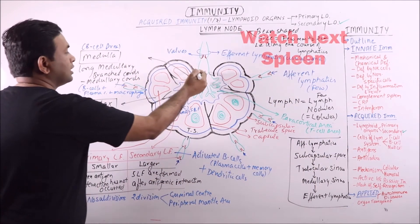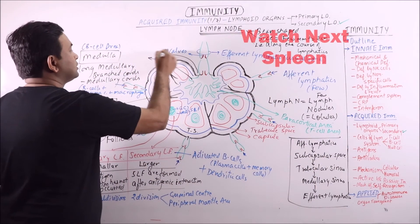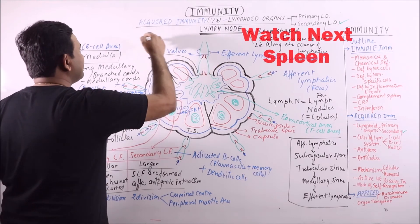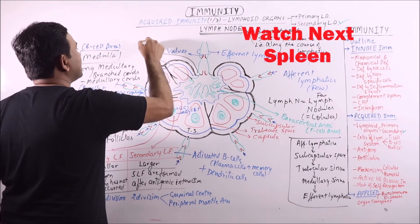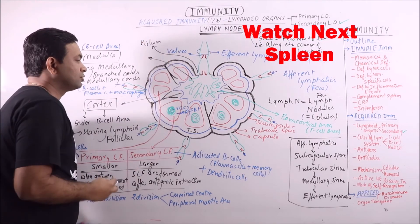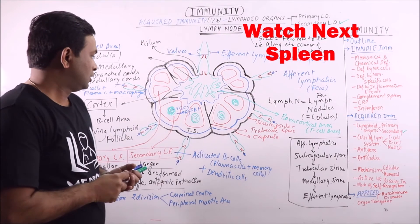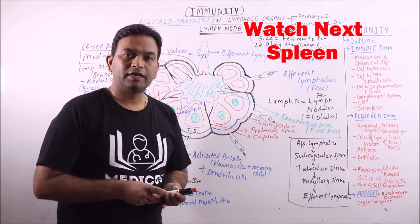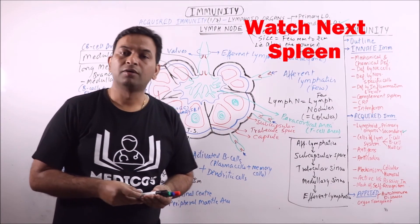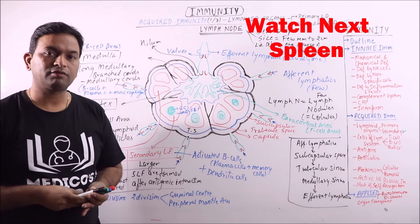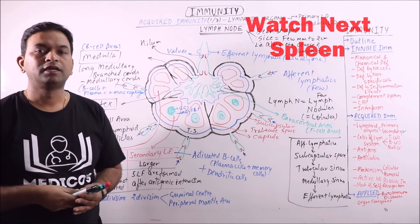The region representing the concavity is known as the hilum of the lymph node. The main function of a lymph node is the destruction of microorganisms and various types of antigens.